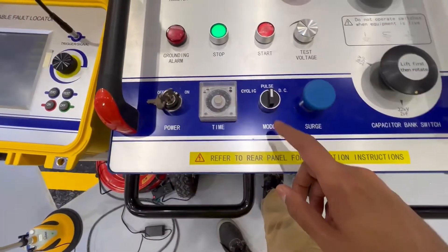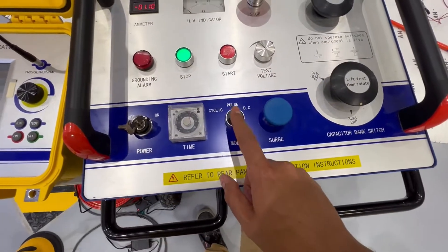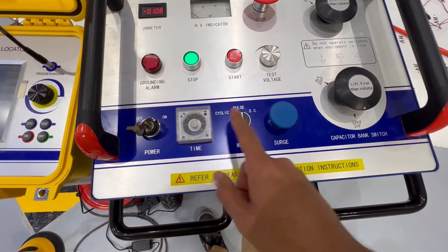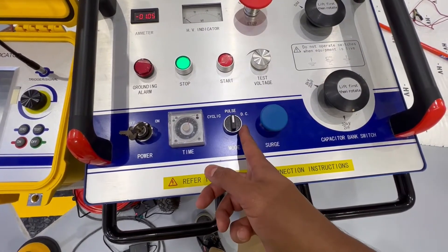This is a mode switch. You can set either a pulse mode or a cyclic mode setting the time, or you can do a DC voltage test, which we call a decay test or a high pot test.